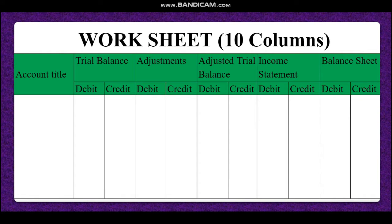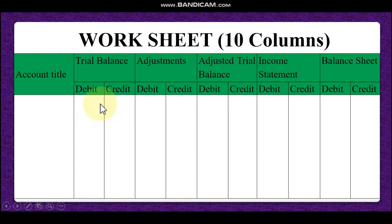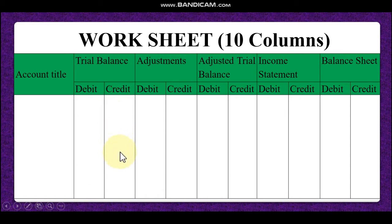Dear student, this is a format of worksheet. This is a 10-column worksheet format. You have to write the account title — all income, expense and other items will be in this column. Then in the trial balance, asset accounts will be debit and expense accounts also debit. In the credit side, we will write income, liability and equity. There are five types of accounts, and here we write the name of account, then all asset and expense accounts will be debited, and income, liability and equity will be credited.